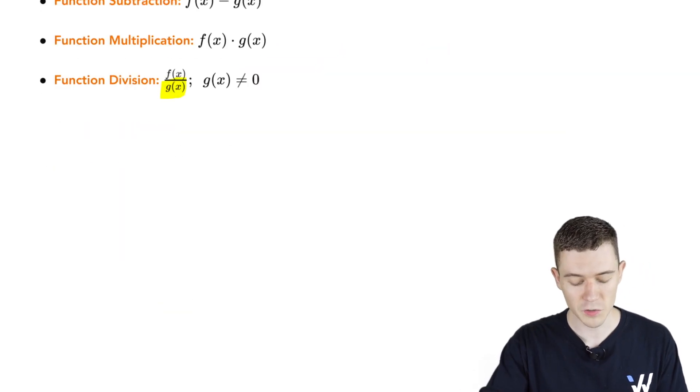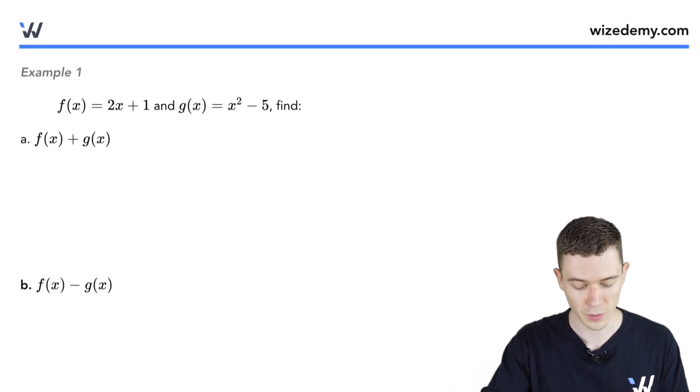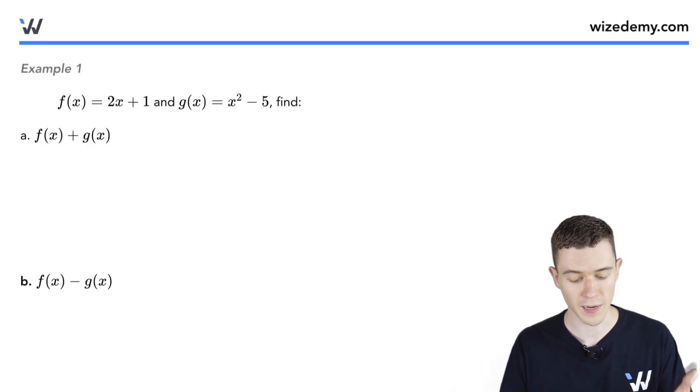Now these operations work almost exactly like you would expect them to. Here we have two functions: f is 2x plus 1, g is x squared minus 5.